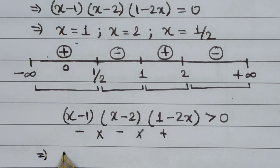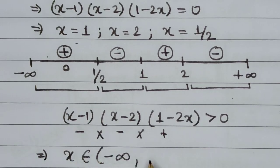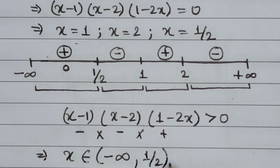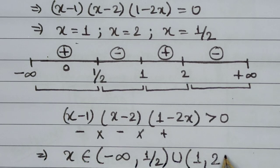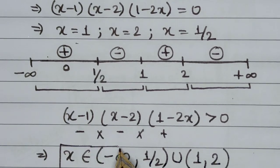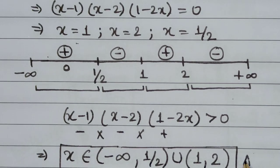We are getting a positive sign in two ranges. Hence, the final answer to this problem is: x belongs to (negative infinity, 1/2) union (1, 2). This is the final answer to this mathematical inequality.